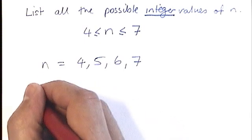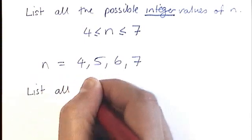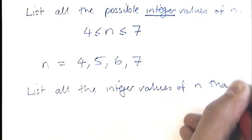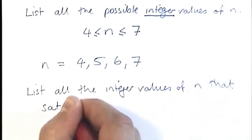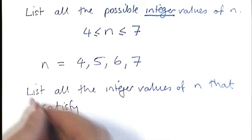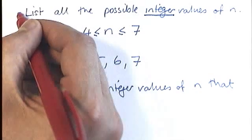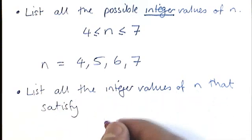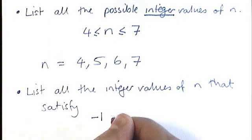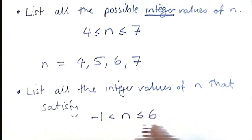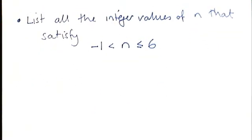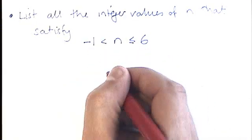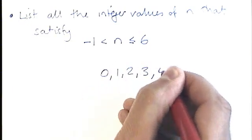Another way of putting it is for examiners to say: list all the integer values of N that satisfy. And then they give you an inequality. So this is a second way of phrasing it. This word satisfy just means the same as we had before. It just means we've got to find numbers that work in the inequality. So let's list all the integer values of N that satisfy: minus 1 is less than N, which is less than or equal to 6. So let's try getting some numbers down on the paper first. The first thing I would do is go at the ones that are obvious in the middle here. So in between minus 1 and 6 are 0, 1, 2, 3, 4, and 5.